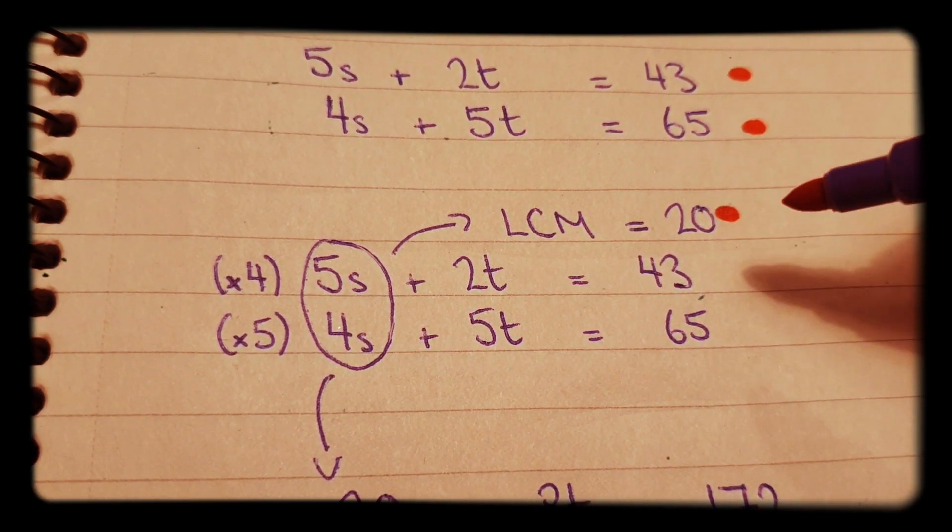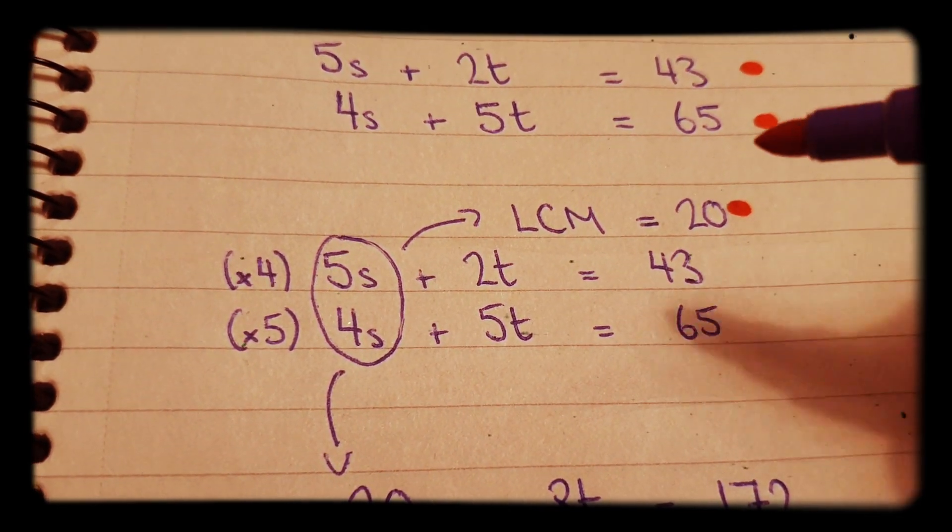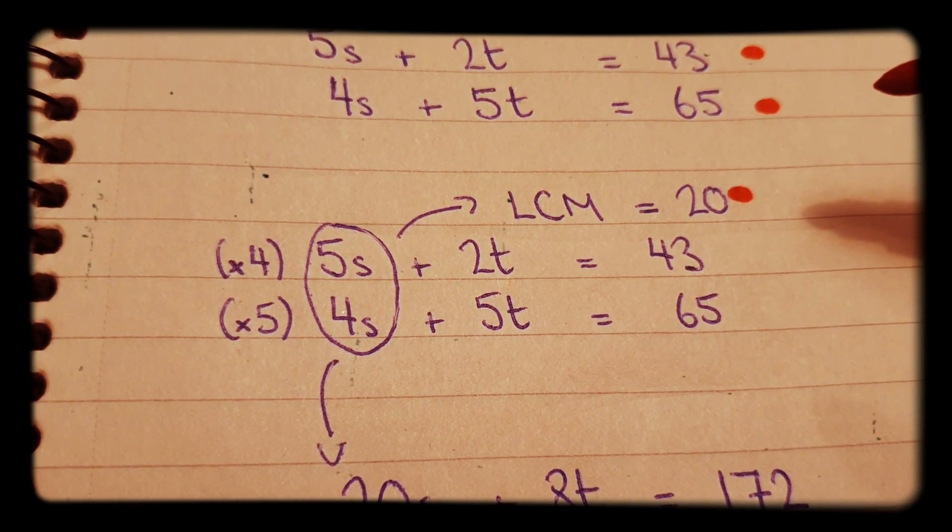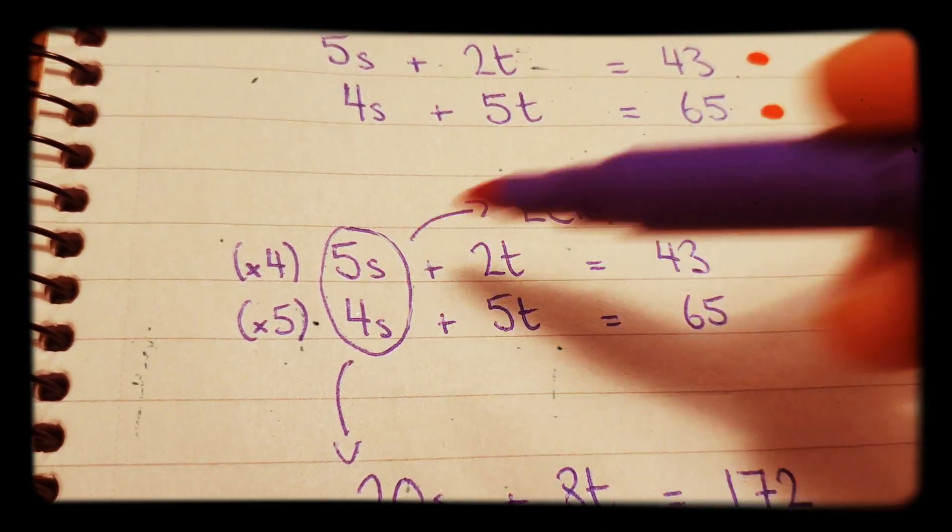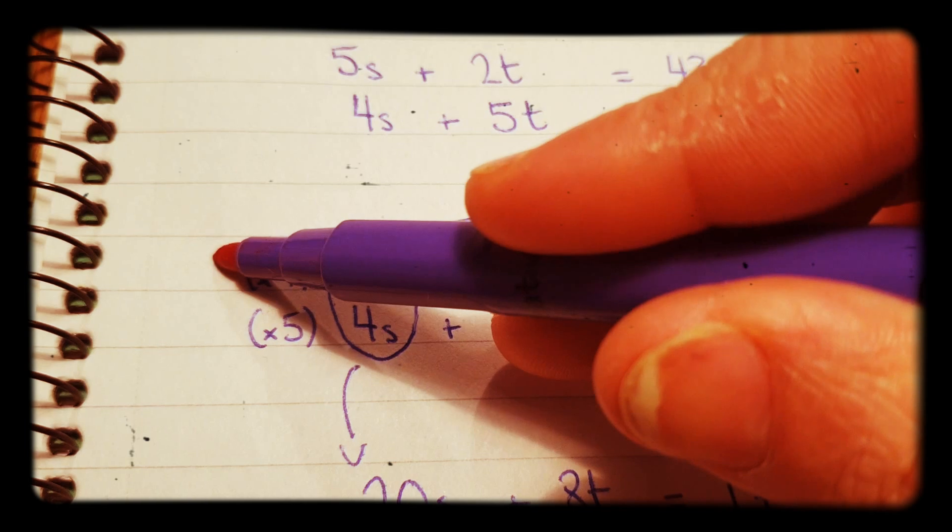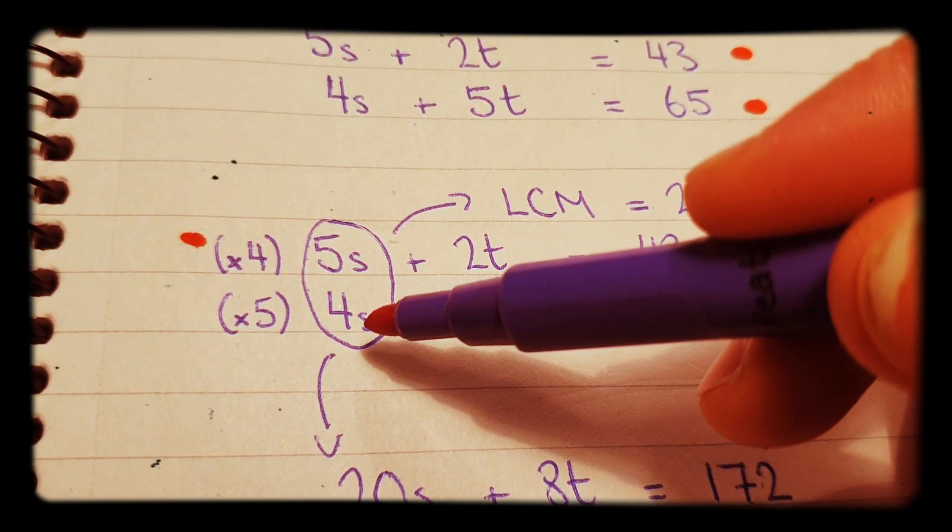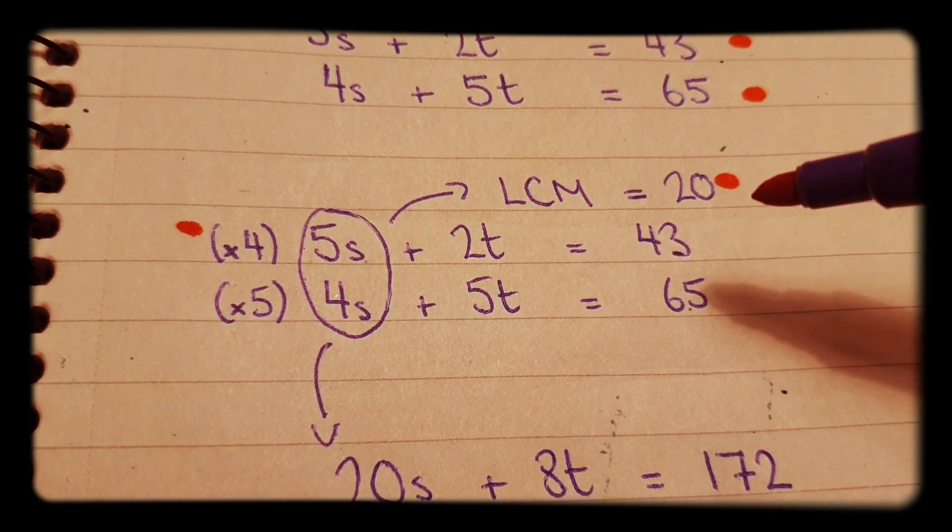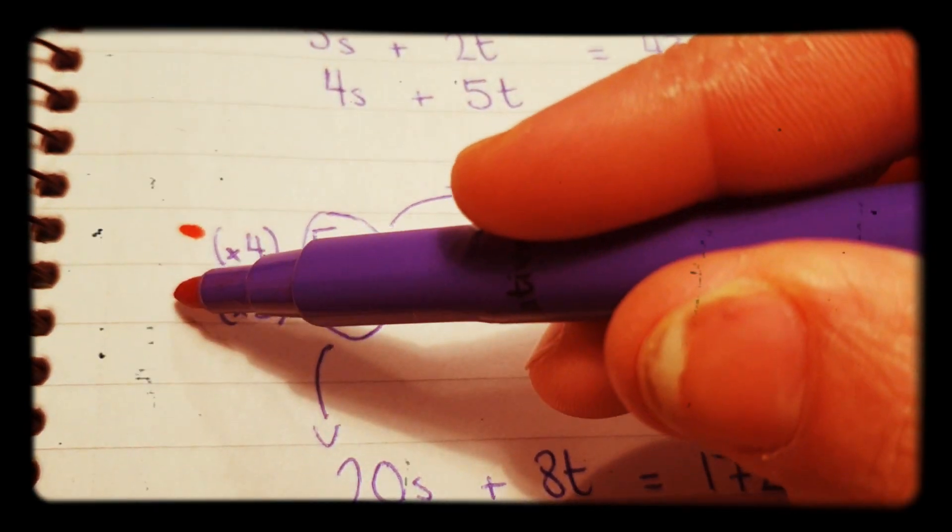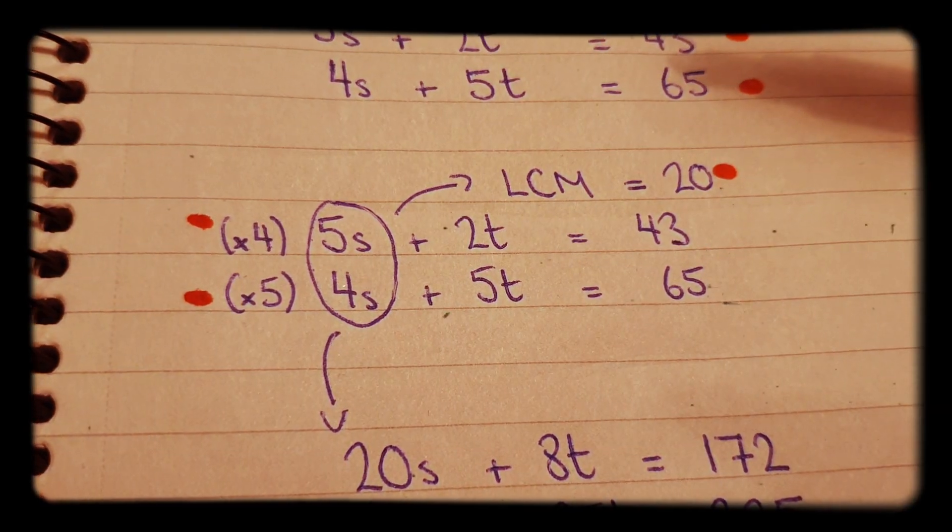It's 20. So 5 goes into 20 and 4 goes into 20. 5 goes into 20 four times, so we times the top line by 4. And the second line, the 4s, that goes into 20 five times, so we are timesing the second line by 5.